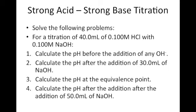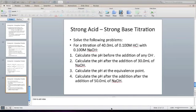Here is a sample problem to try. You're going to be titrating 40 milliliters of 0.100 molar HCl, a strong acid, with 0.100 molar sodium hydroxide. In this case the strong acid is in the flask and you're titrating in the strong base. Calculate the pH before any OH⁻ is added, after 30 milliliters of strong base is added, at the equivalence point, and after 50 milliliters of sodium hydroxide has been added. Give that problem a try!